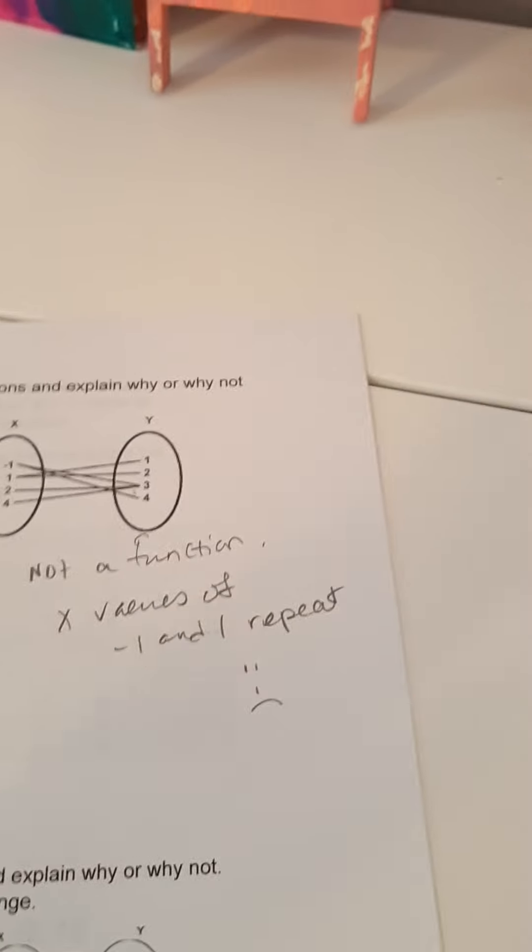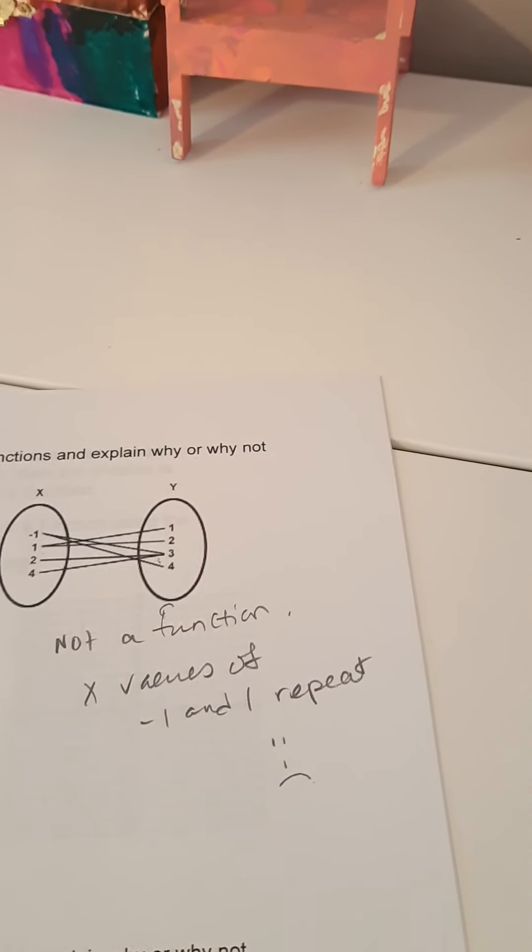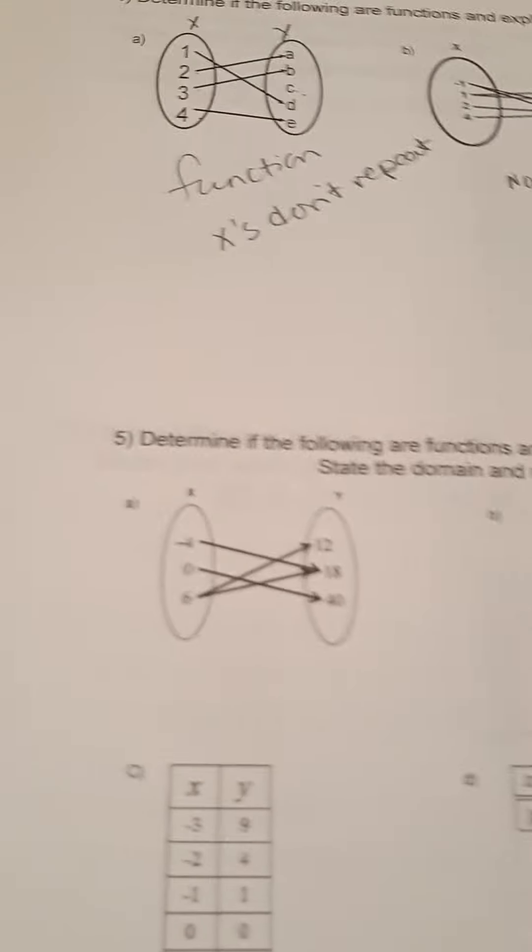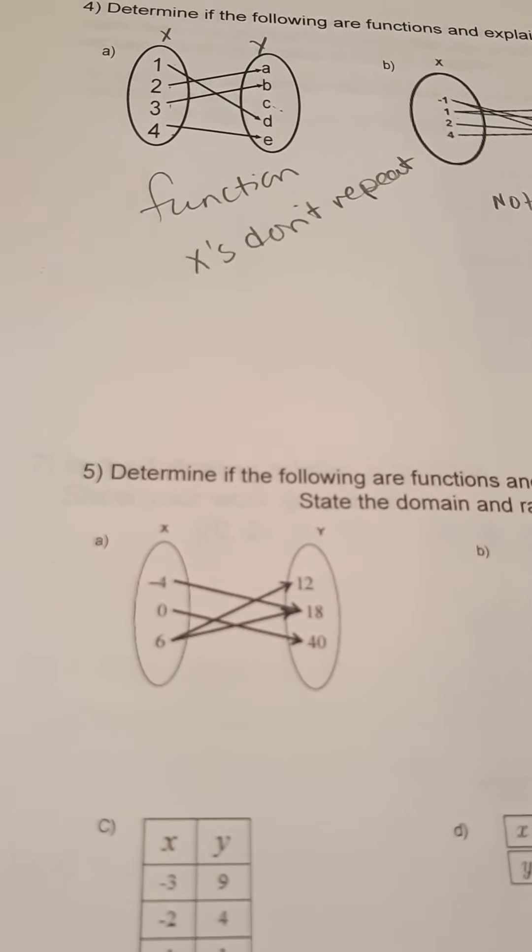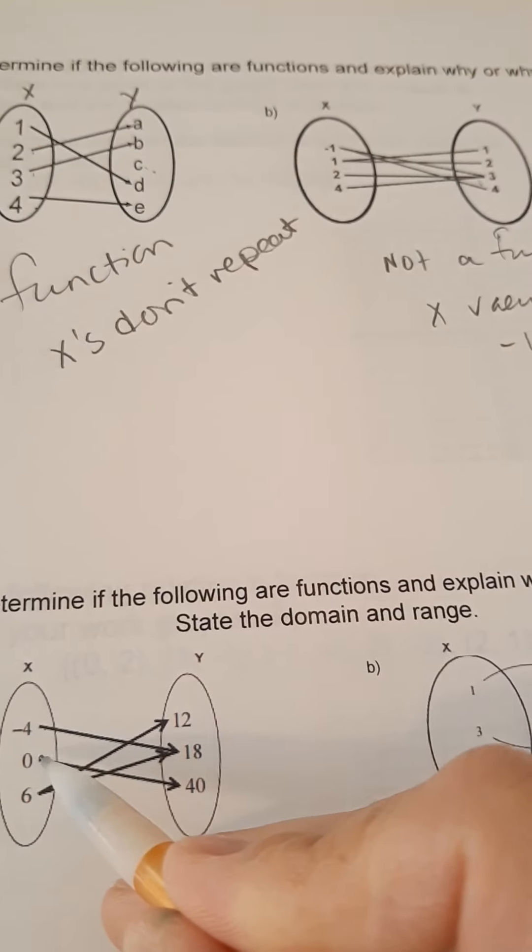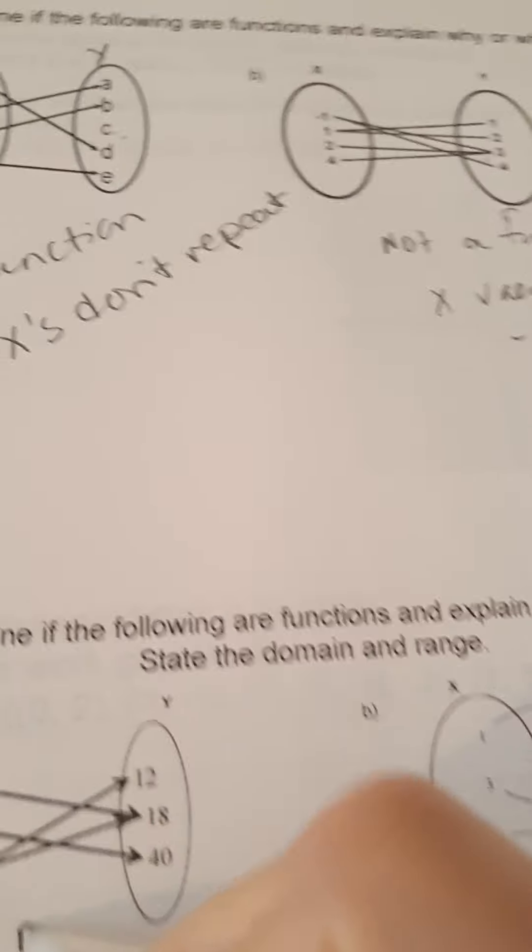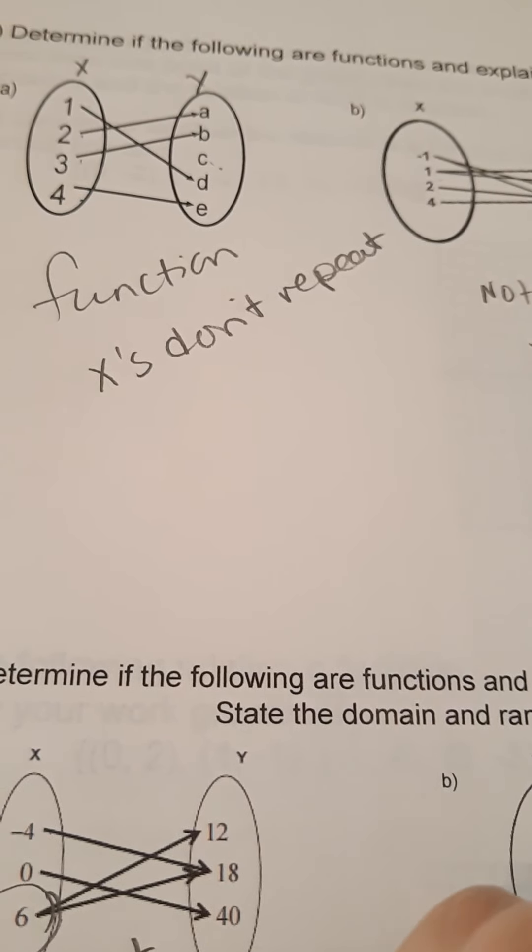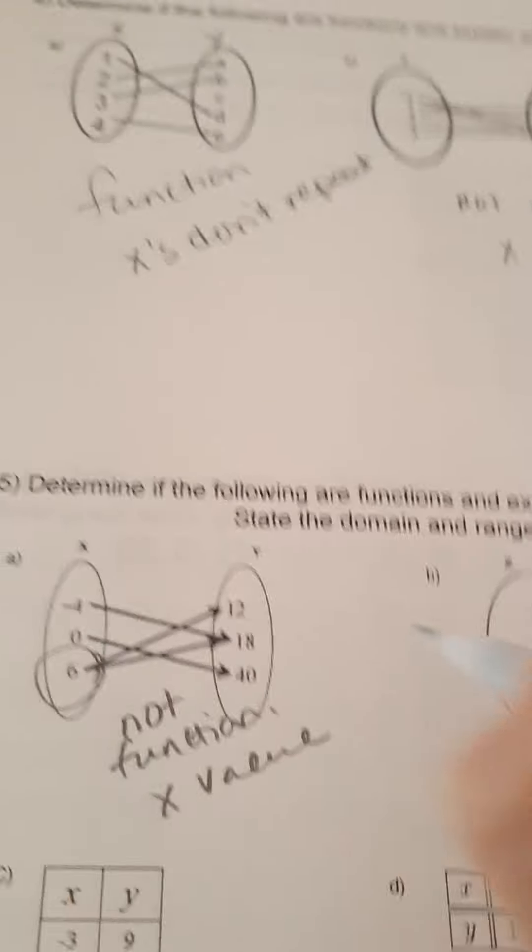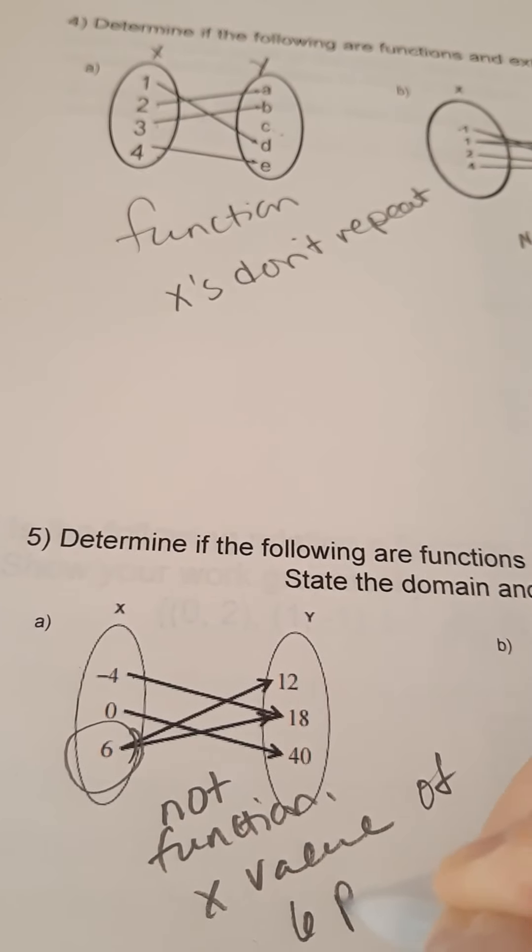Okay, so that's your mapping diagrams. Let's do a couple more. Determine if the following are functions and explain why or why not. So, one arrow, one arrow, two arrows, not a function. X value of 6 repeats.